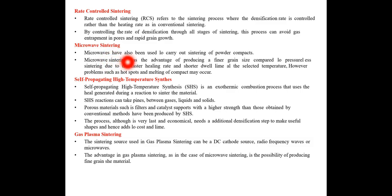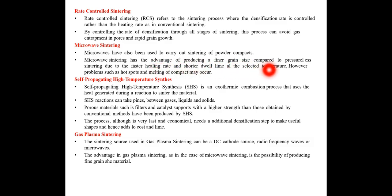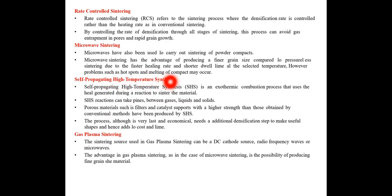Microwave sintering has also been used to carry out sintering of powder compacts. It has the advantage of producing a finer grain size product compared to conventional sintering, because of a faster heating rate. However, problems such as hot spots and melting of the compact may occur.